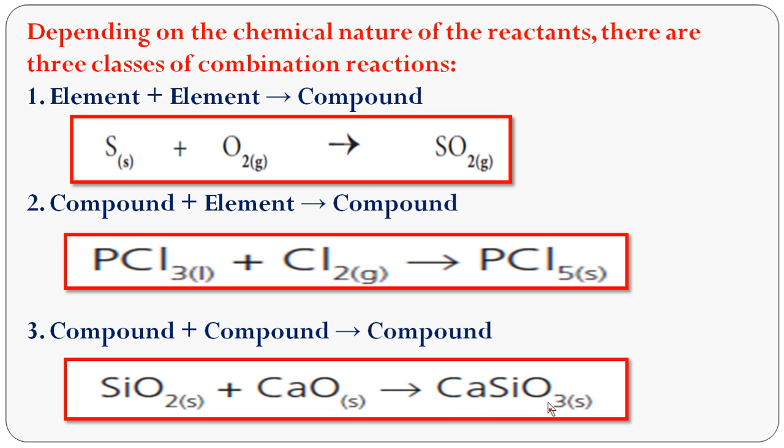Most combination reactions are exothermic in nature. Exothermic means heat is liberated because they involve the formation of a new bond.